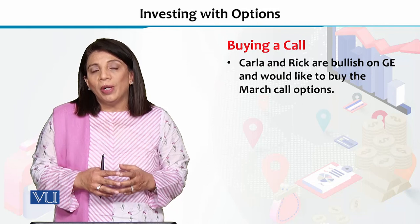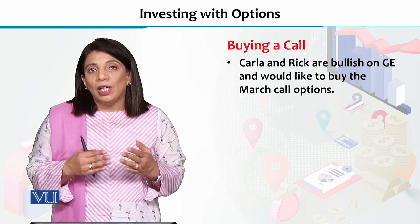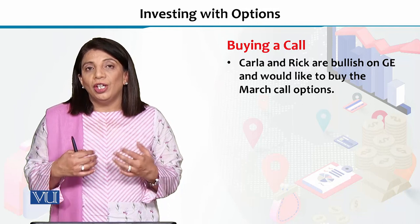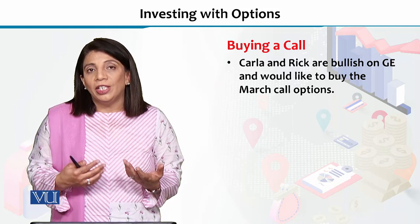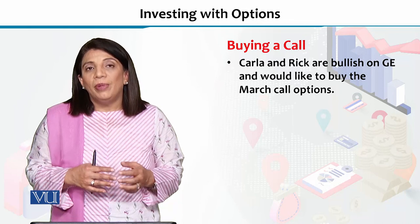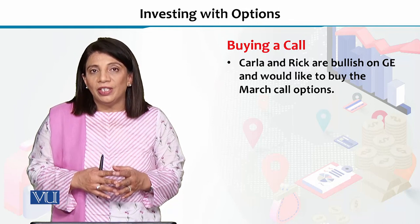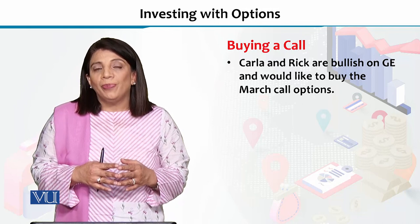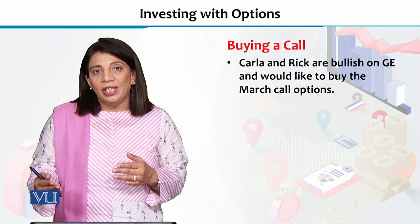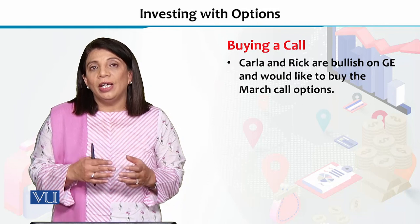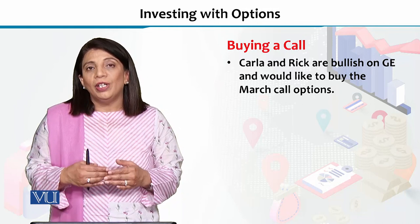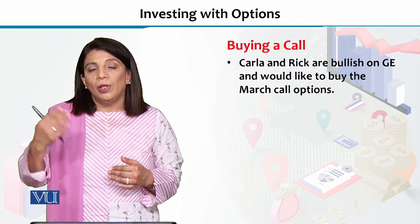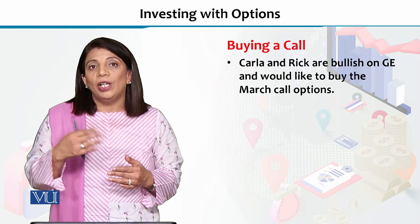We use two terms: bearish and bullish. Bearish means the investor believes that the value of a certain stock is going to go down. If they understand that it is going to move up and up, then we say this is a bullish trend.